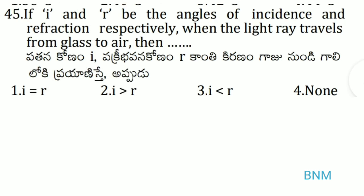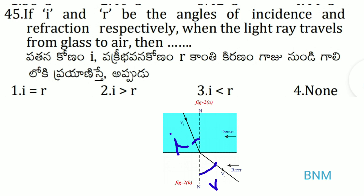This is the right answer. If I and R be the angles of incidence and refraction respectively, when the light ray travels from glass to air — that is from denser medium to rarer medium — it bends away from the normal line. Therefore the angle of refraction R is greater than angle of incidence I, so i is less than r is the right answer.